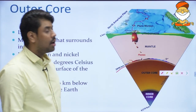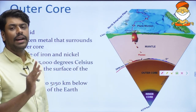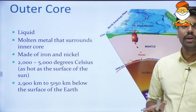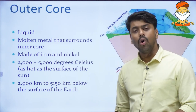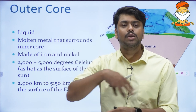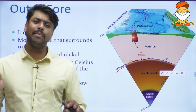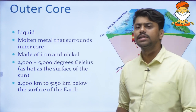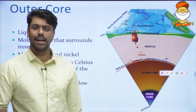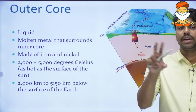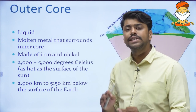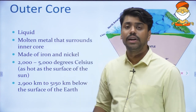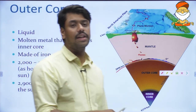When we come to the outer core, it starts approximately 2890 kilometers from the crust. The outer core is liquid — molten metal that keeps rotating and swirling around the inner core. Its composition is the same: iron and nickel, NiFe. The temperature ranges from 2000 to 5000 degrees Celsius — as hot as the surface of the sun itself. In fact, sometimes the core is even hotter than the sun.